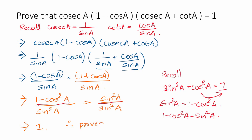Hence proved. In this problem, what is important is: we need to know the definition of cosecant A, the definition of cot A, and that sin² A plus cos² A equals 1. If you remember these, you will be able to do it. In the next video, we will solve another problem.